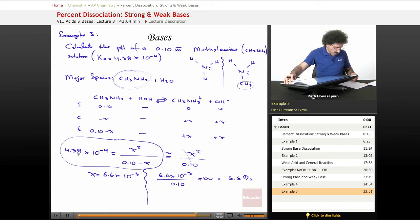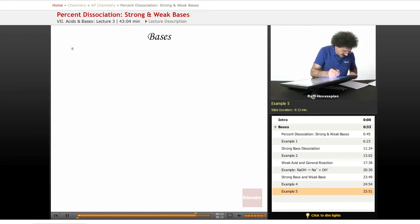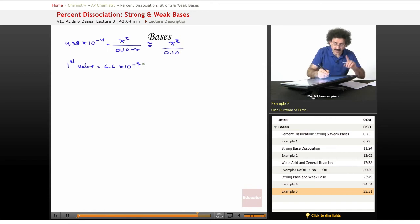Now let's go back. We said that we have 6.6 times 10 to the negative 3. When we did this approximation of 4.38 times 10 to the negative 4 equals x squared over 0.10 minus x approximately equal to x squared over 0.10, we got a value of our first value. We got 6.6 times 10 to the negative 3 for x. We checked this. 6.6 times 10 to the negative 3 divided by the 0.10 and we got 6.6 percent. That's too high. Instead of going back and solving this, here's what you do.